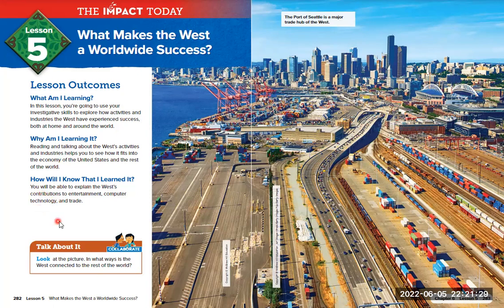You're going to be talking about computers, technology, and trade. You're going to be explaining why the entertainment industry became so important to the west, predicting what the next advance is probably going to be, and describing what makes the west a good place to host the Olympic Games. Later on you are going to be writing to talk about different features of the west.